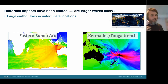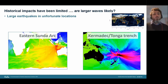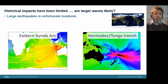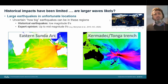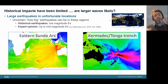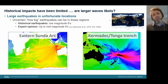The impacts have been limited, but are larger waves likely? One way to assess this is by placing large earthquakes in well-directed locations — well suited to send tsunami waves to Australia. Possible examples exist for both the west coast and east coast. A tricky issue is uncertainty about how big earthquakes can be in these regions. Historical events are in the low magnitude eights, but these areas have big, fast-converging faults, and expert opinion suggests magnitudes up to the mid-nines are possible, with great uncertainty.